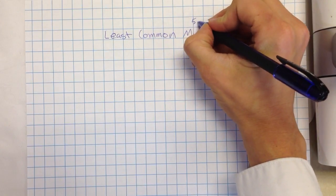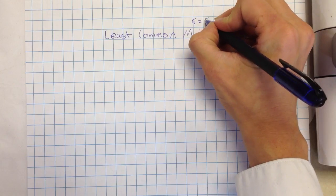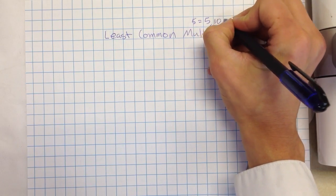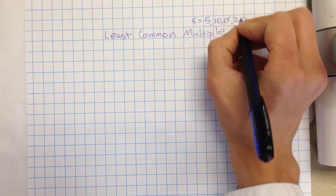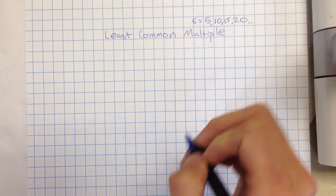So if I was to write the multiples of five, for example, it would be five times one is five, ten, fifteen, twenty, and so on. It could go on forever. There's many multiples.